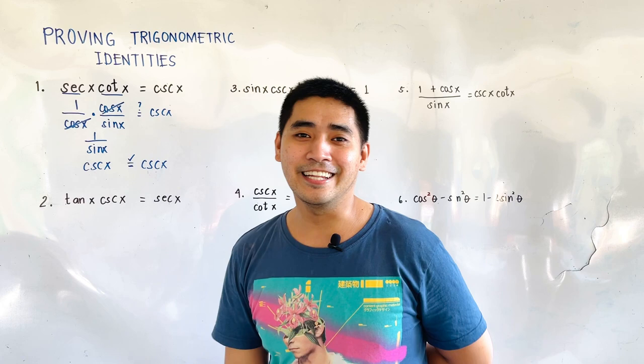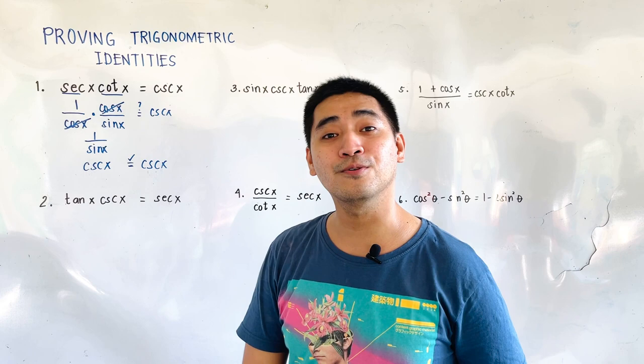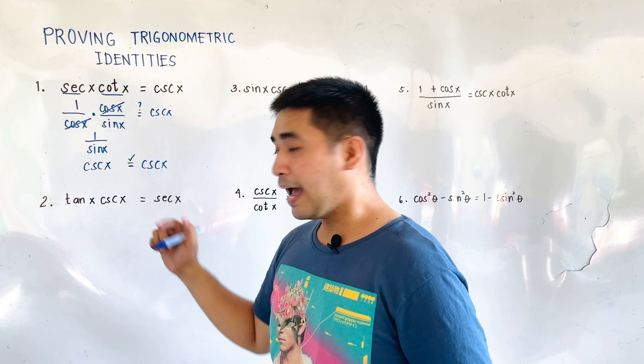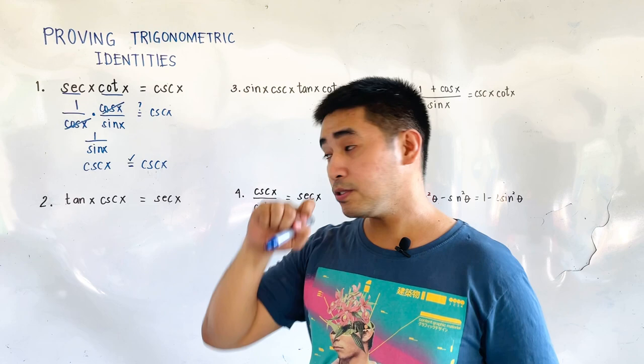Let's now answer problem number 2. We are given tangent of x times cosecant of x is equal to secant of x. Again, we choose the left side because it contains two terms, and from that we should be able to simplify it by reducing it to sines and cosines.